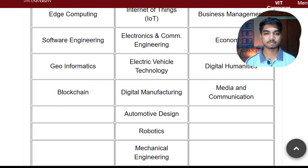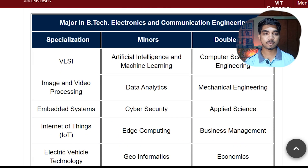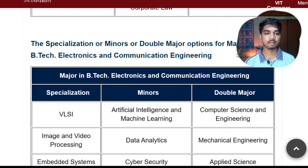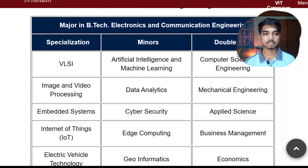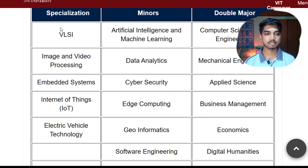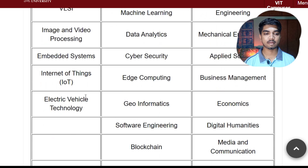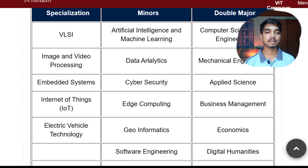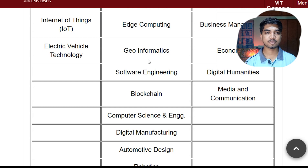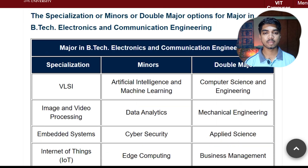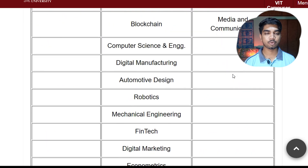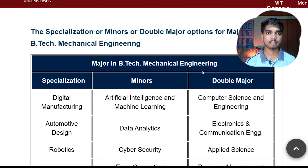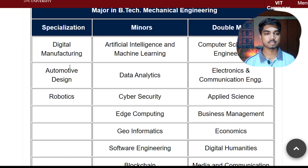Similarly, for Electronics and Communication Engineering, you can do specializations in VLSI, Image Processing, Embedded System, IoT, and Electric Vehicle Technology. For minors in ECE, you can do AI and ML, Data Analytics, Cyber Security, Geo-Photonics, Software Engineering - a lot of options. And double majors are also available there, so you have many options.